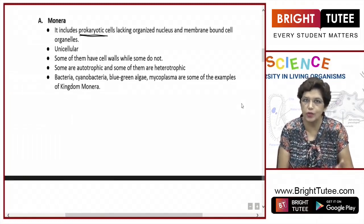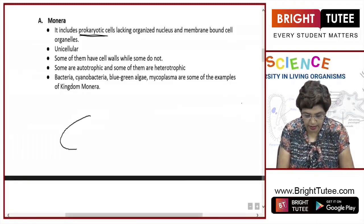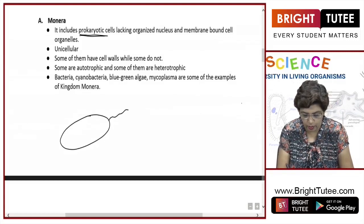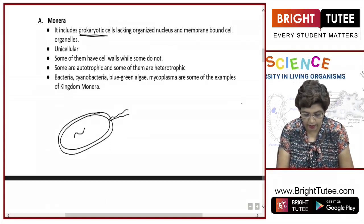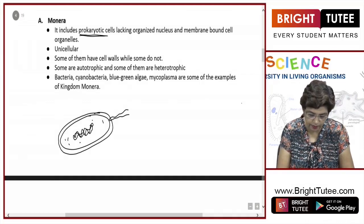This is a typical bacterial cell with hair-like structures. There is an outer capsule over here, then a chromatin material which is called nucleoid, and the cytoplasm.